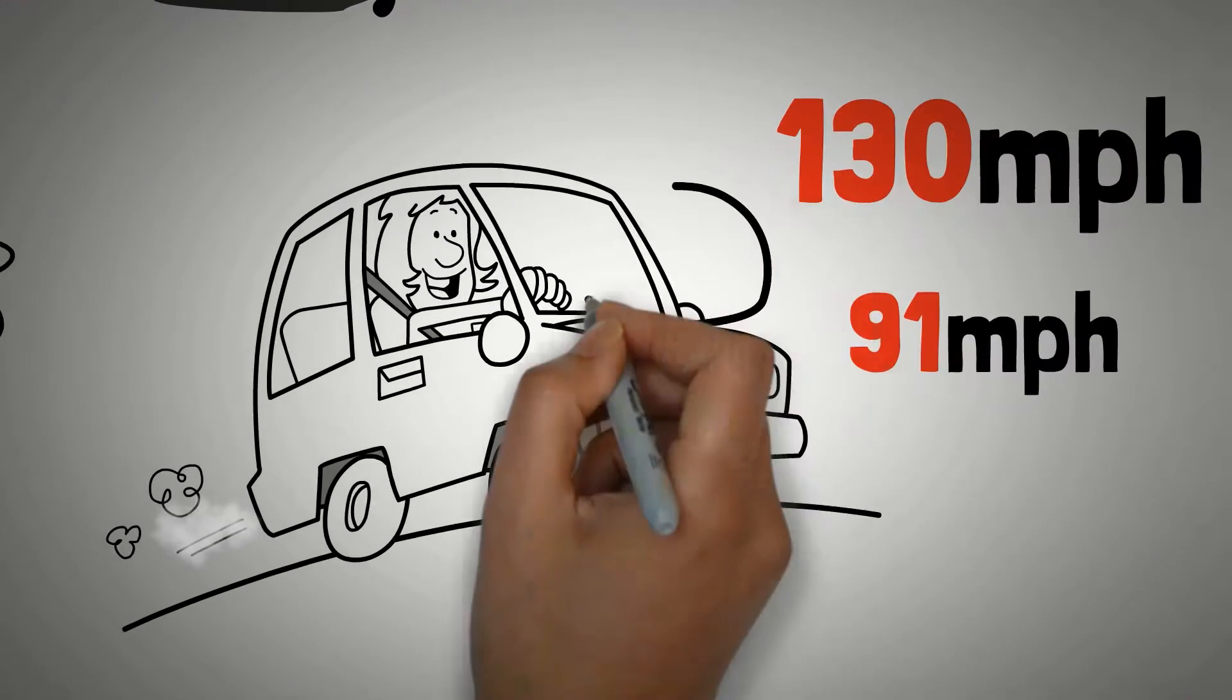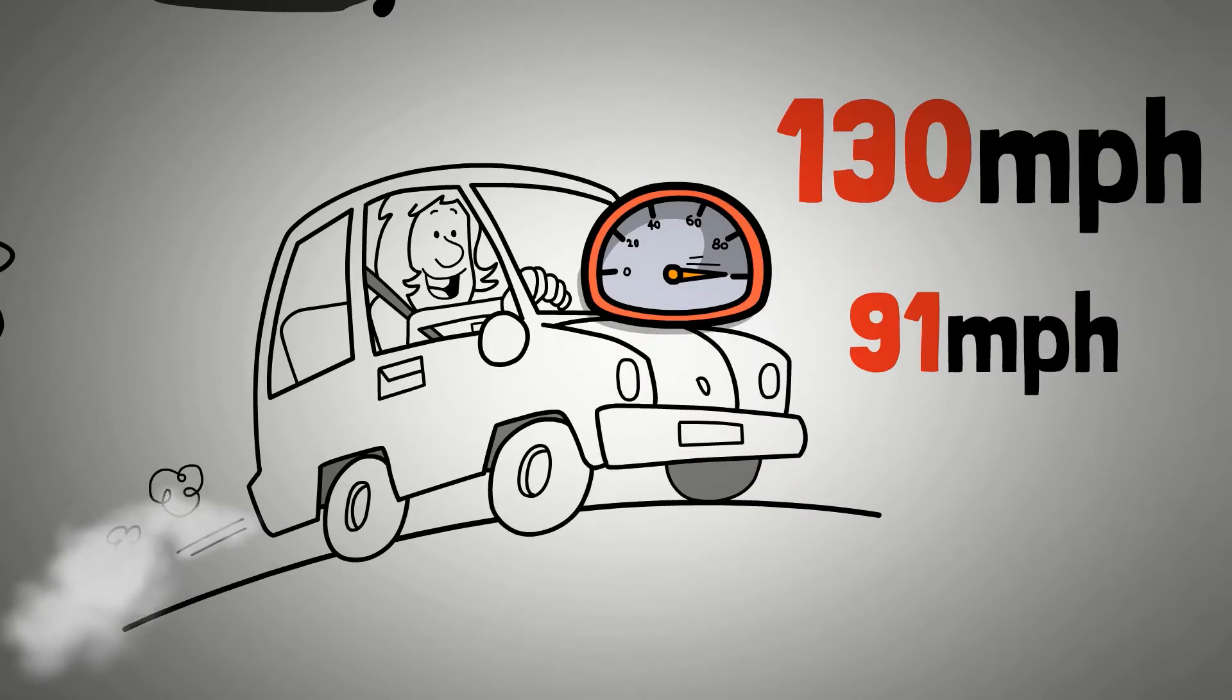Once that governor sets in, you get to 91, that car starts doing this. The car wants to go. The car wants to go, but that factory said we're not going past 91.